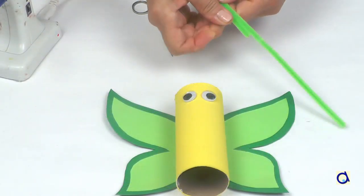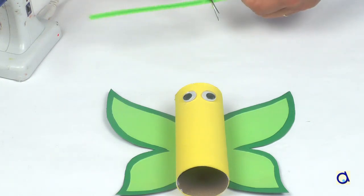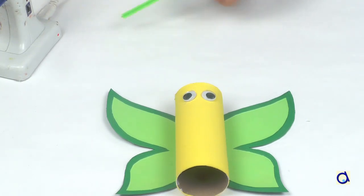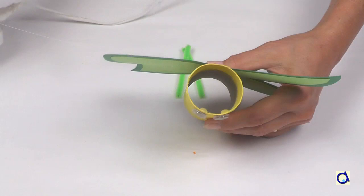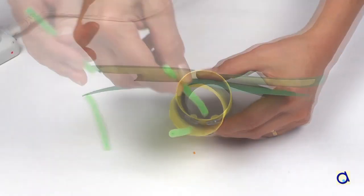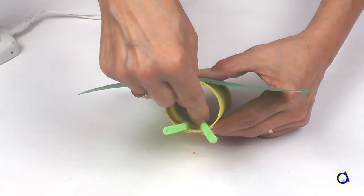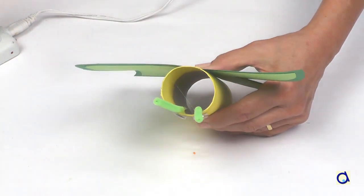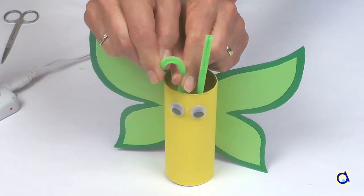Cut two pieces of pipe cleaner of about 4 inches long. Put two dots of hot glue in the tube above the eyes and glue the two pieces of pipe cleaner in place. When the glue has cooled down, bend the butterfly antennas to your liking.